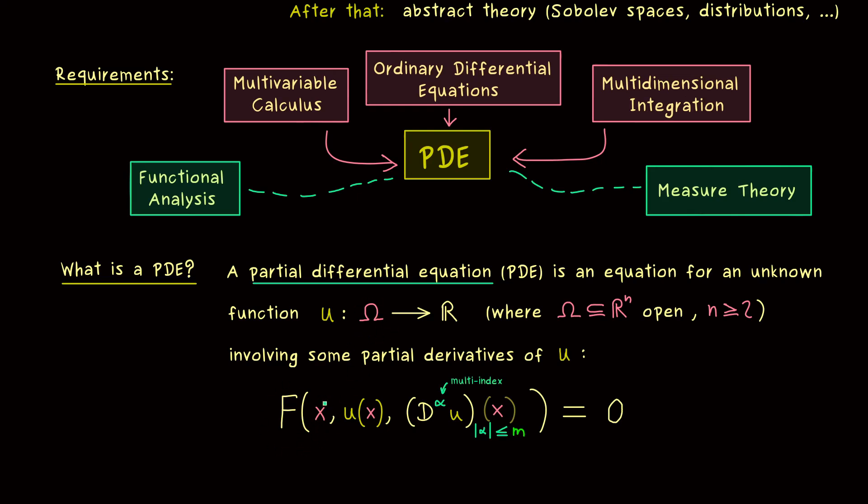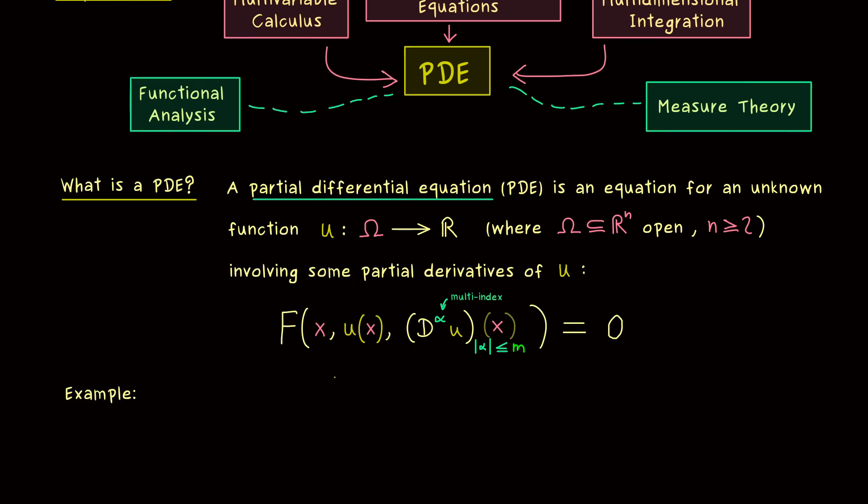With that our capital F is now a well defined map, which gets omega as an input here, R as an input there, and a lot of Cartesian products of R there. Of course this is just a formal description, and what we actually mean you immediately see in an example.